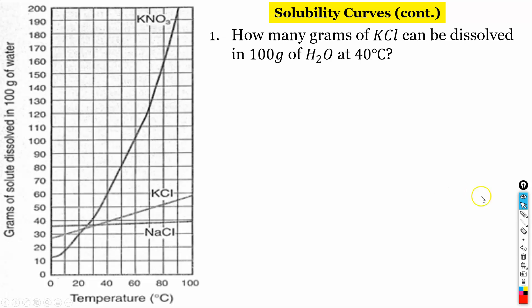Okay so this is a solubility curve. The question is how many grams of potassium chloride dissolved in a hundred grams of H2O at 40 degrees? How many grams can be dissolved in a hundred grams of H2O? Okay so if you look on the graph here it says we have a hundred grams of water and the axis here is grams of solute.